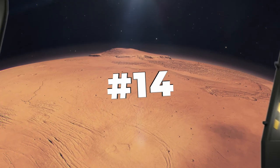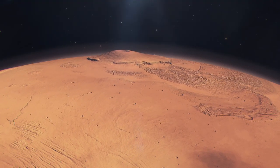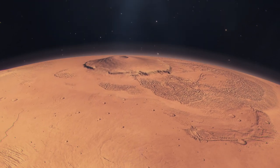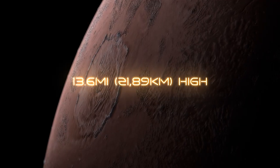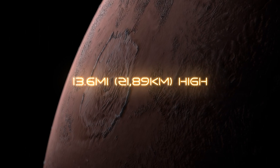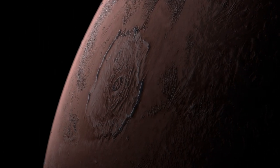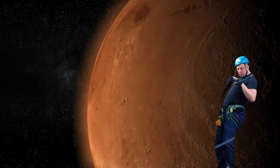Number 14. The highest mountain known in the solar system is Olympus Mons on Mars, which is about 13.6 miles high, nearly three times the height of Mount Everest. We wonder if Elon Musk is planning to climb it.